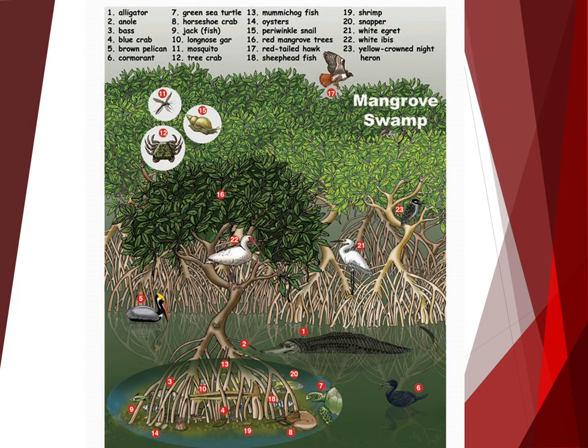Mangrove swamps, like the one you see on the screen here, are a type of marine shore found in subtropical and tropical areas. Mangroves are a group of tree species that are adapted to grow in salt water. They form forests in shallow tidal areas. They are among the most productive ecosystems on Earth because they provide homes for a wide variety of invertebrates and act as nurseries for many fish species.